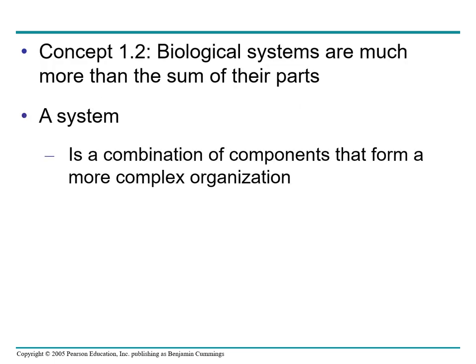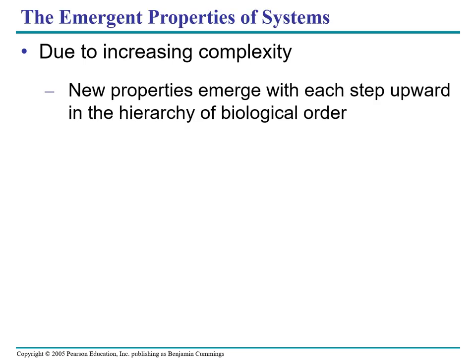Then we have biological systems — Concept 1.2. Biological systems are much more than the sum of their parts. A system is a combination of components that form a more complex organization. Due to increasing complexity, new properties emerge with each step upward in the hierarchy of biological order. For example, photosynthesis occurs in an intact chloroplast but will not take place in a disorganized test tube mixture of chlorophyll and other chloroplast molecules — the coordinated process requires a specific organization. Isolated components of living systems lack significant properties that emerge at a higher level of organization.